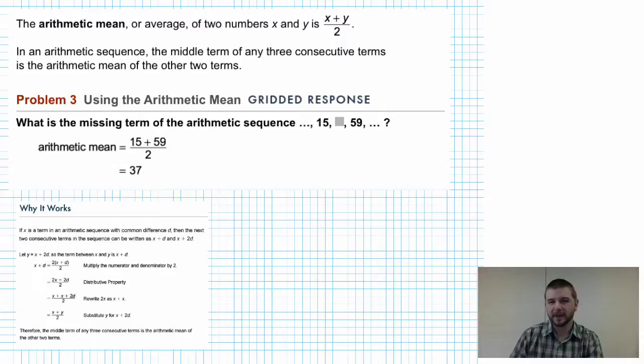If you take a moment to think about this, that makes some really good sense. Let's see an example. Problem 3: Using the arithmetic mean, what is the missing term of the arithmetic sequence ... 15, blank, 59 ...?